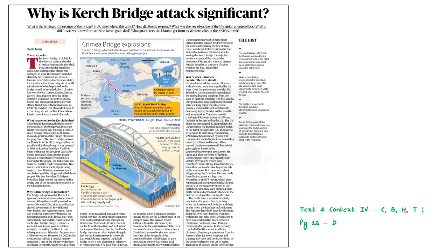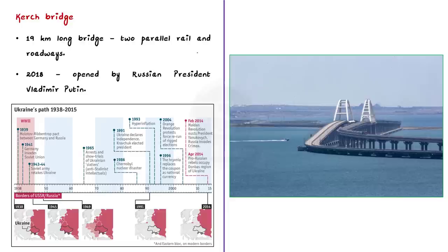The next article discusses the Kerch Bridge, which links the Russian mainland to the Crimean Peninsula in the Black Sea. Last week, the bridge came under attack by two sea drones, damaging one section. Russia called it an attack by Ukraine, though Ukraine has not taken direct responsibility. The Kerch Bridge is a 19 km long bridge with two parallel rail and roadways, opened in 2018 by President Putin exactly four years after the annexation of Crimea.